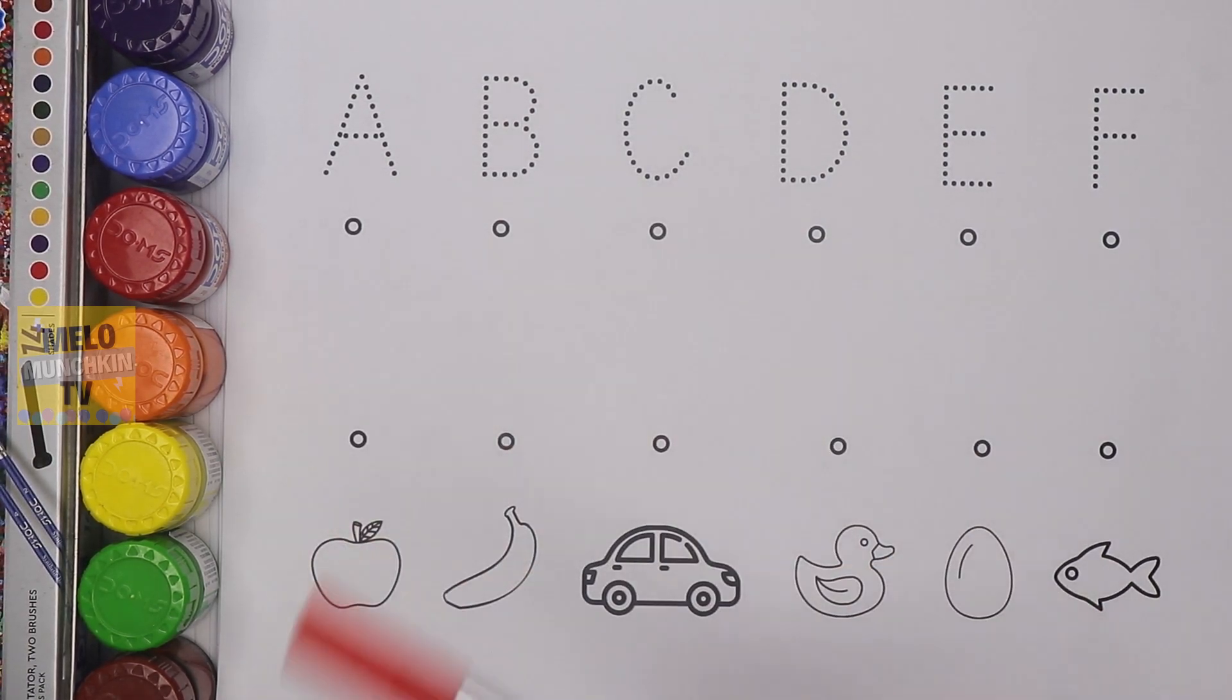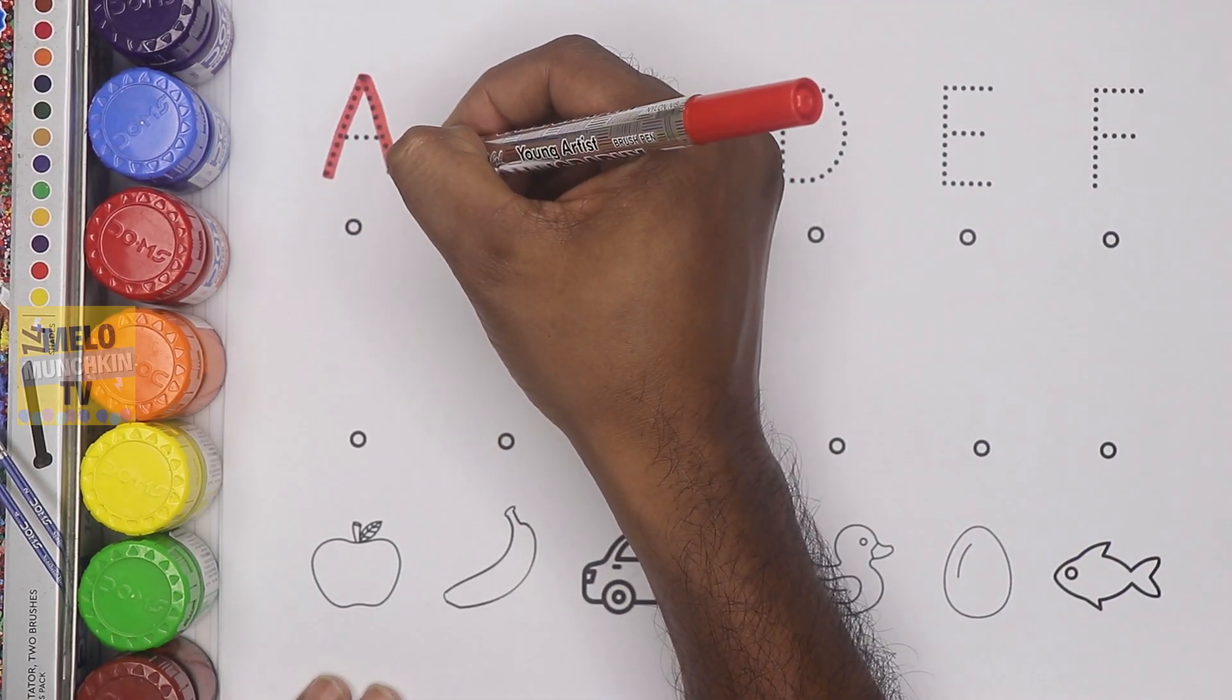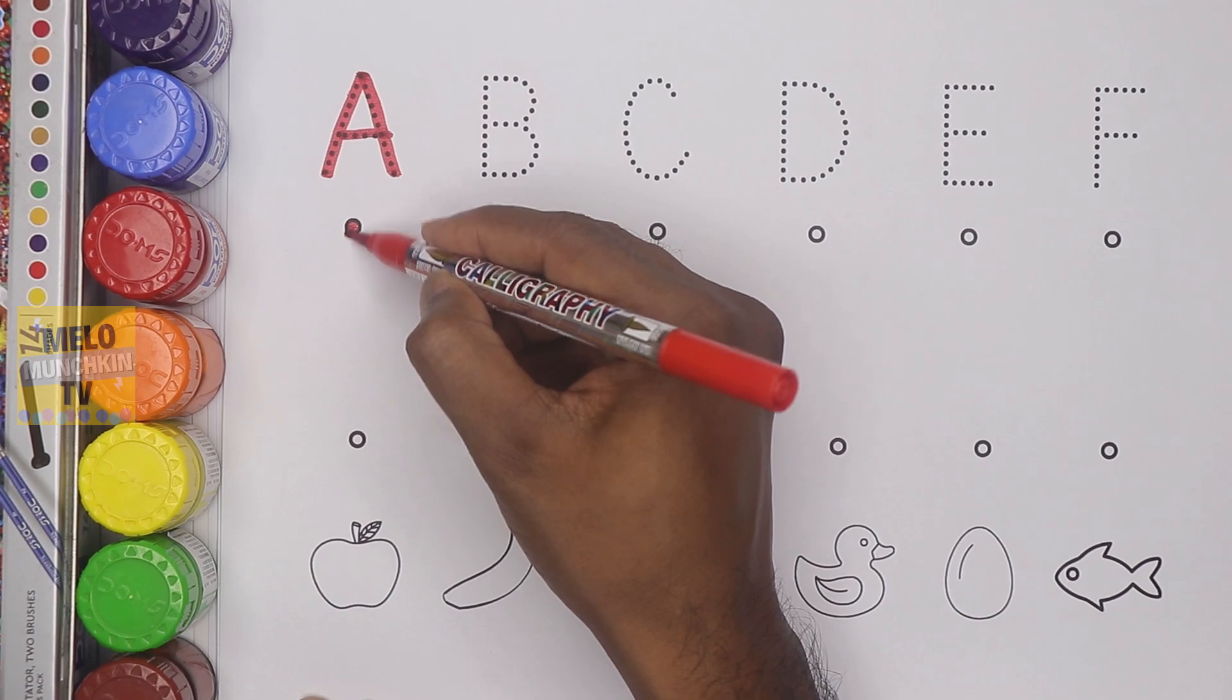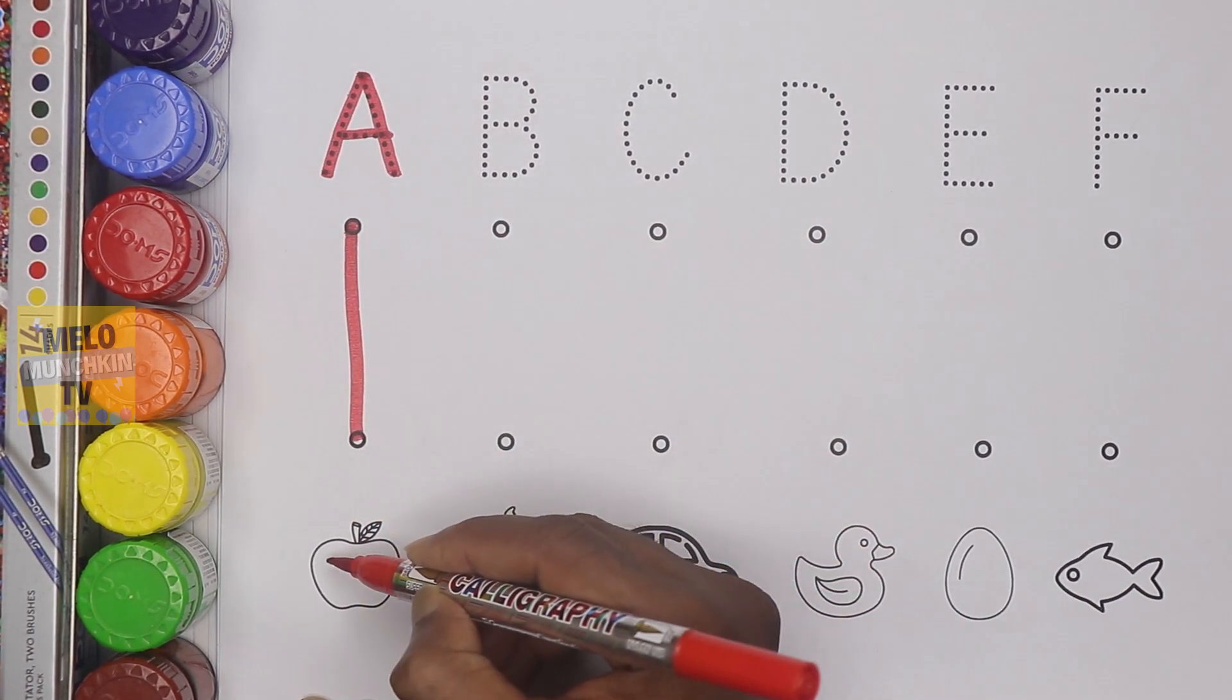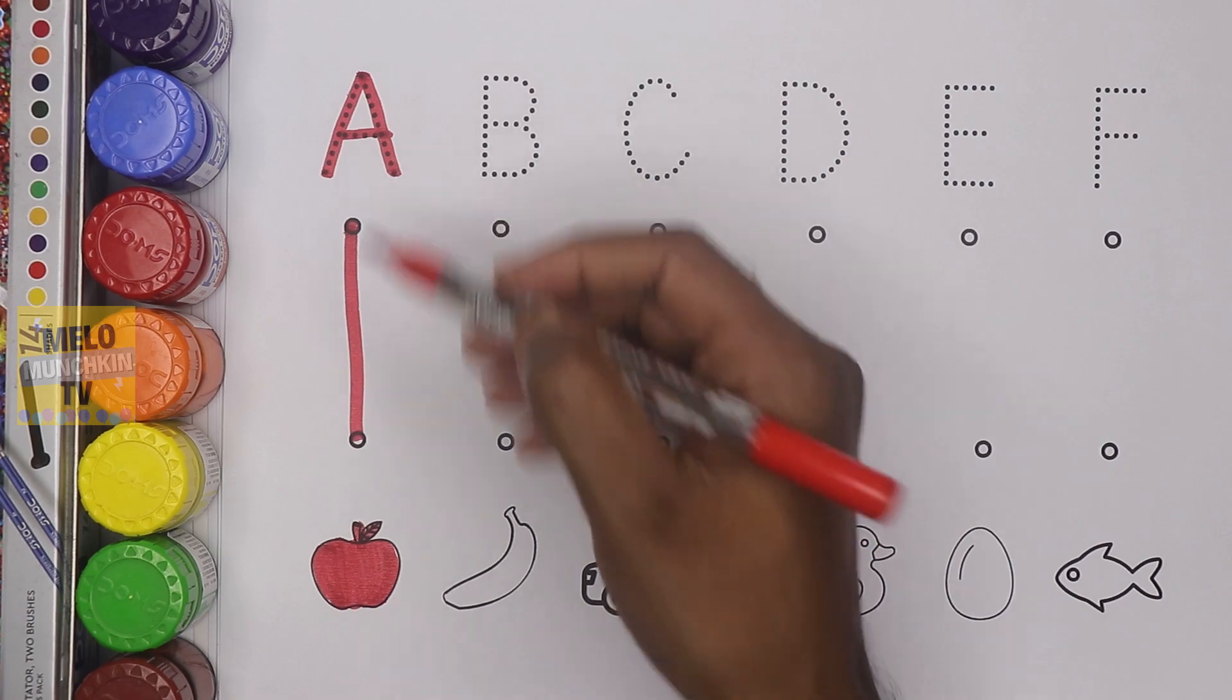So first I'll take red color and write the letter A. This is A. A for apple. This is apple. Let's color it. A for apple.